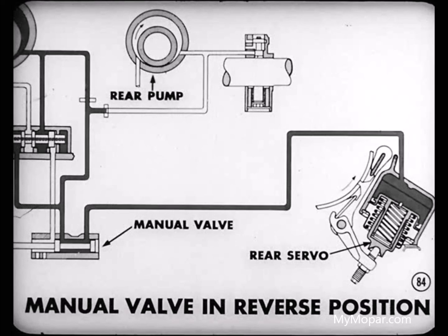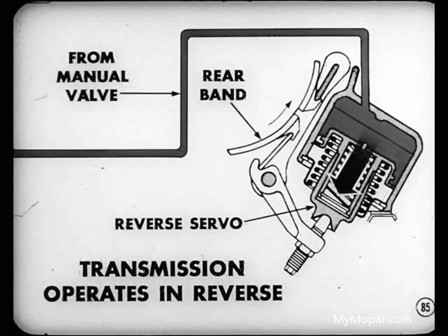Moving the manual valve to the reverse position also opens a port leading to the apply side of the rear servo, exposing this area to the 250 pounds pressure coming from the manual valve. When this happens, the reverse servo immediately applies the rear band, and the transmission operates in reverse.